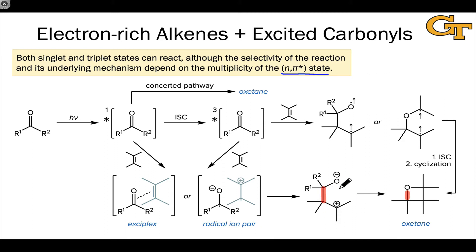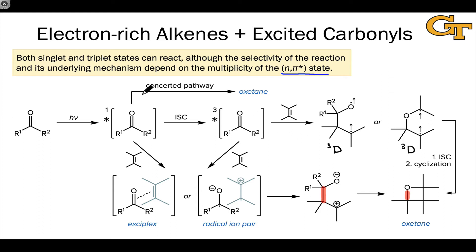As opposed to a zwitterionic intermediate, addition of the alkene to the triplet excited state in particular can produce a diradical intermediate — the triplet diradical. This can happen in a couple of different ways: with formation of the C-C bond first, leading to a C-O 1,4-diradical, or with formation of the C-O bond first, leading to a C-C diradical. To close the oxetane ring, this needs to undergo intersystem crossing followed by cyclization. So we're looking at either a concerted pericyclic pathway or a stepwise pathway involving diradical intermediates from the triplet state or zwitterionic intermediates from the singlet excited state.